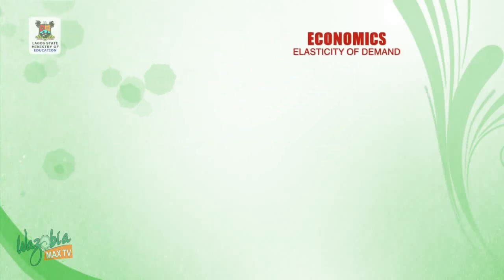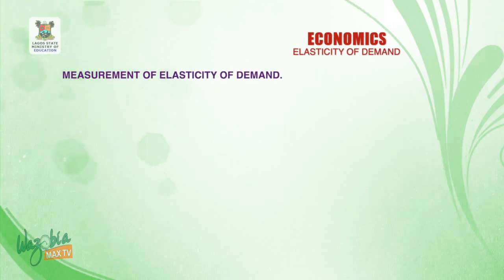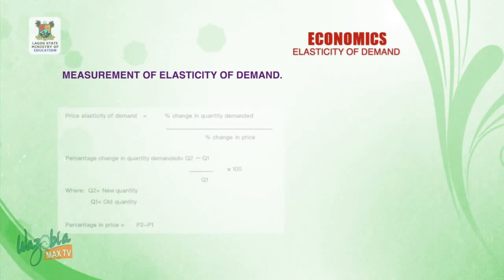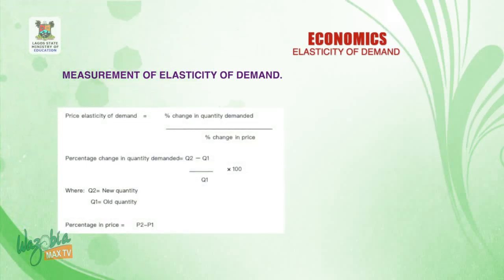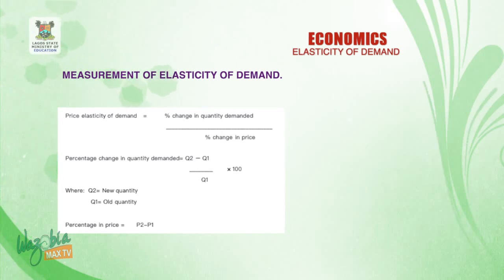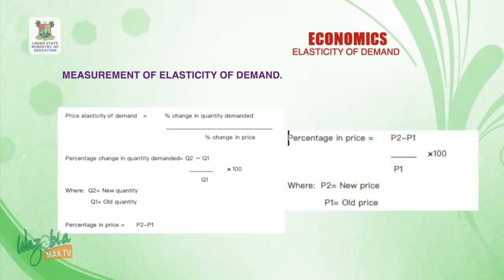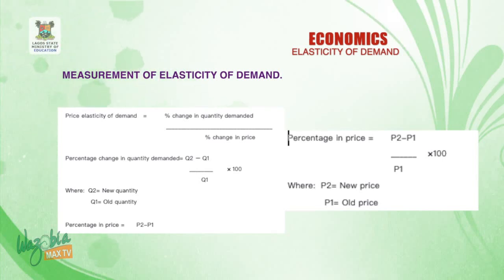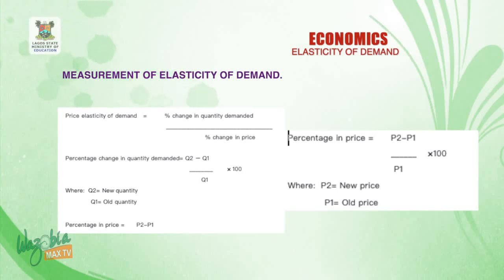Welcome back to the final presentation on the concept of elasticity of demand. After considering the meaning and types of elasticity of demand, we shall now look at the measurements of elasticity of demand. Price elasticity of demand is measured with the formula: percentage change in quantity demanded divided by percentage change in price. Percentage change in quantity demanded equals Q2 minus Q1, all over Q1, multiplied by 100, where Q2 is the new quantity and Q1 is the old quantity. Percentage change in price equals P2 minus P1, all over P1, multiplied by 100, where P2 is the new price and P1 is the old price.